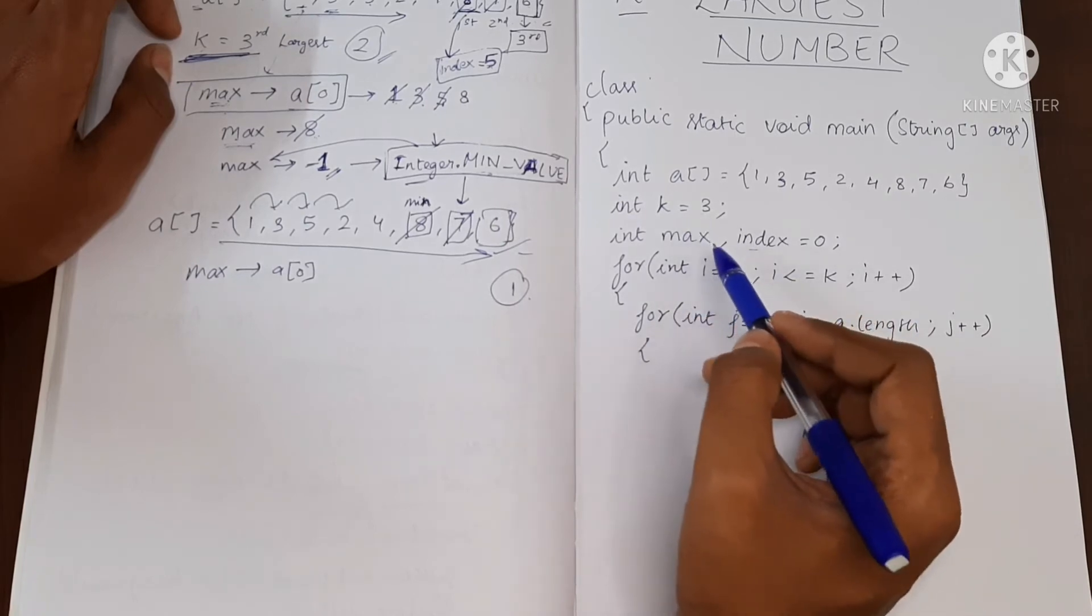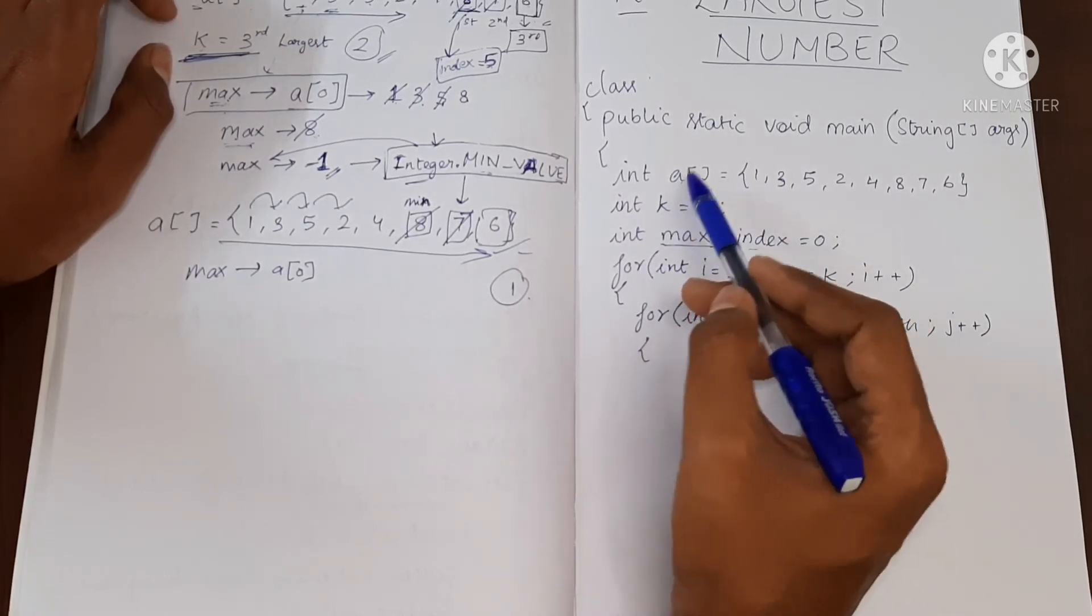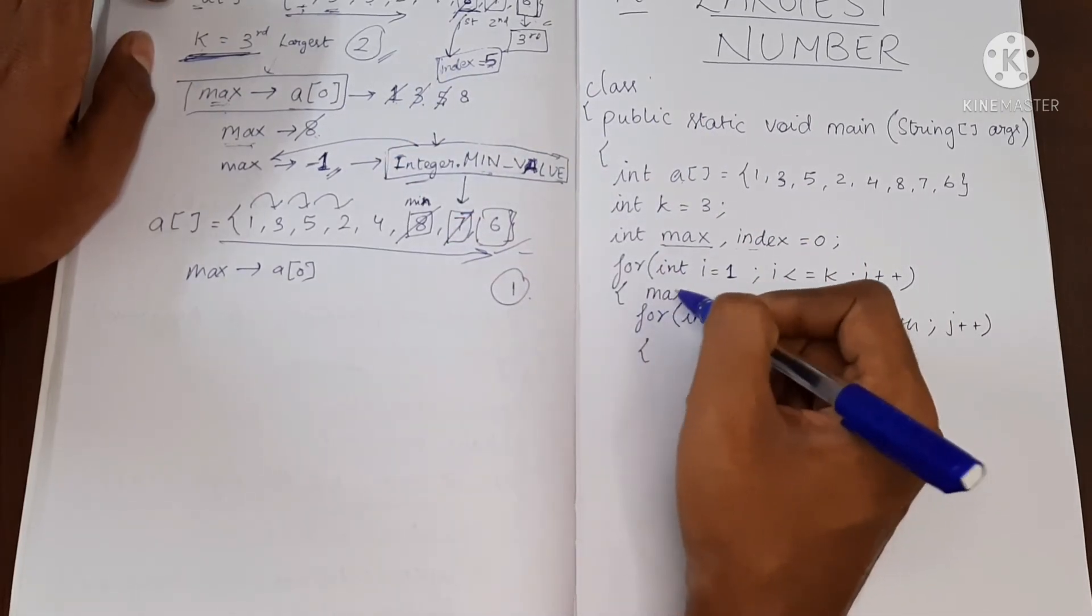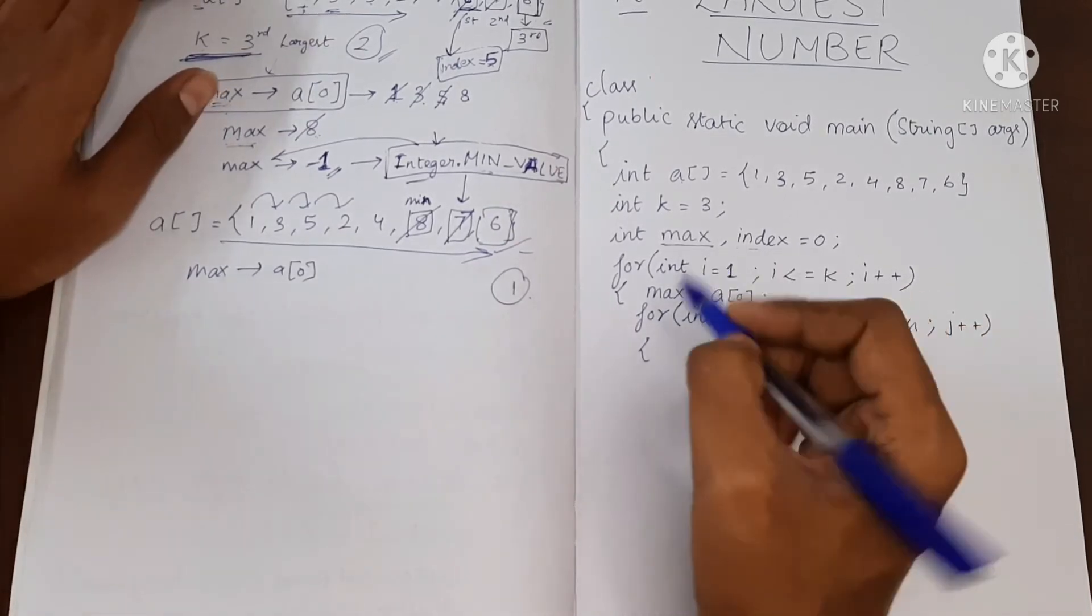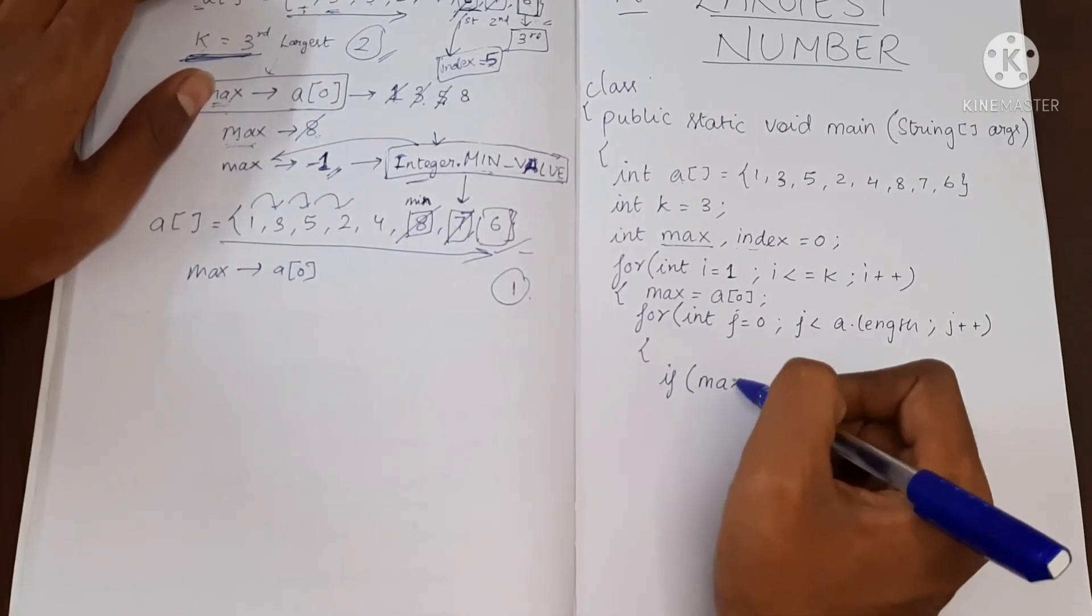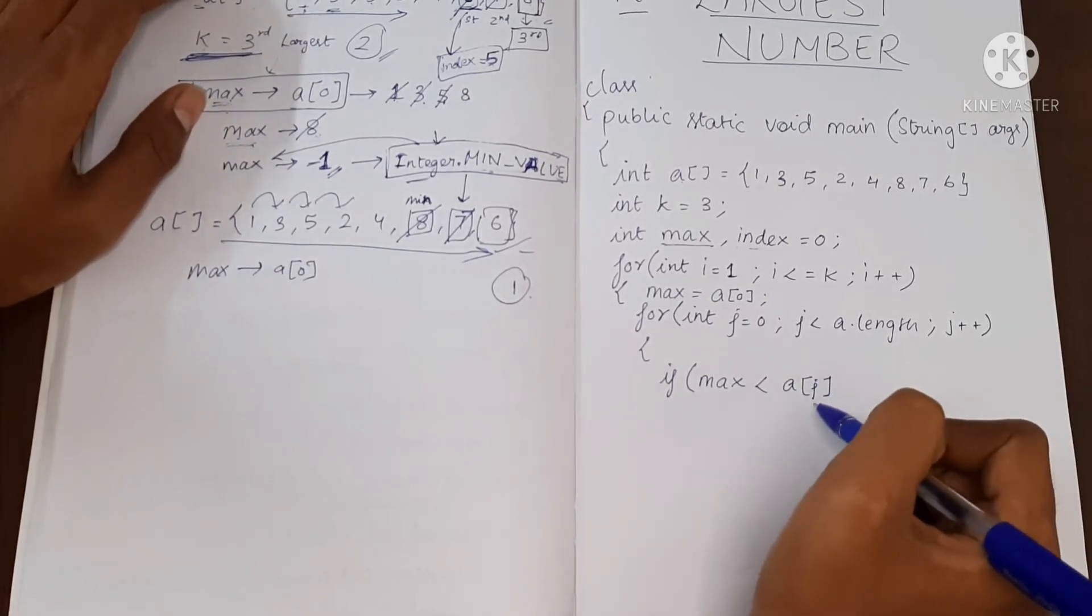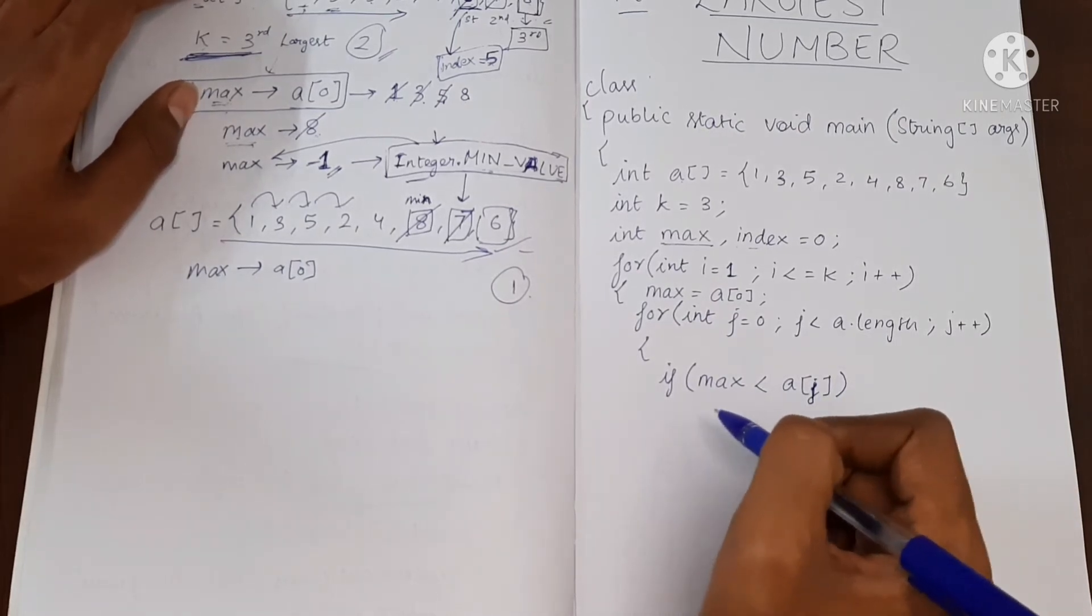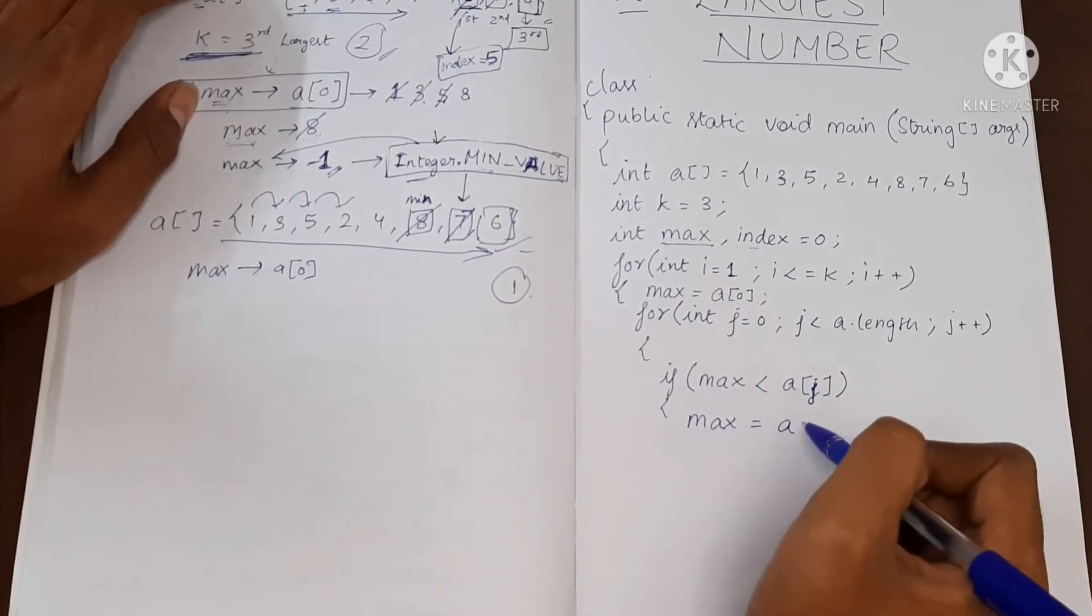So inside, okay we have to declare max as a of 0. This step we forgot. So let's do it over here. Max equal to a of 0. Inside we'll check if max is less than a of j.